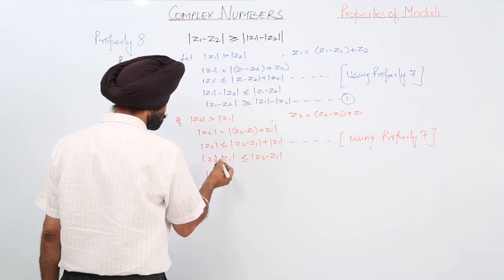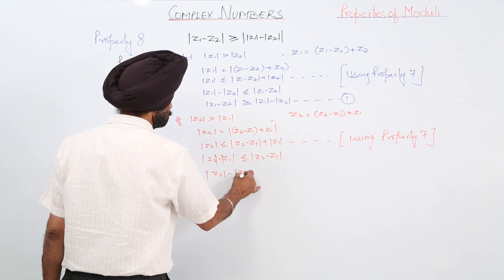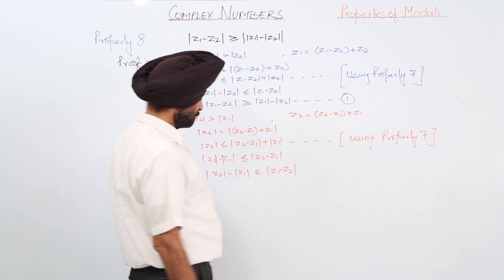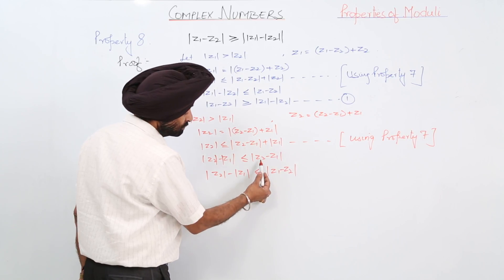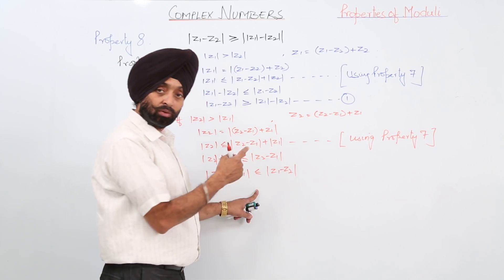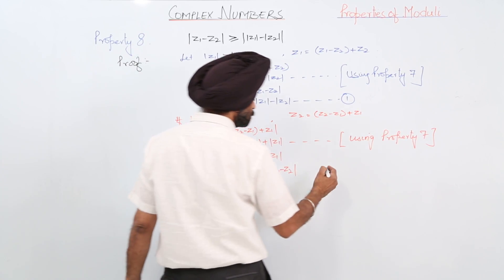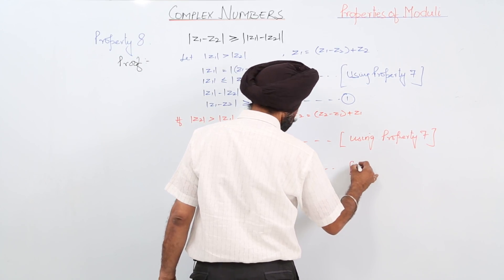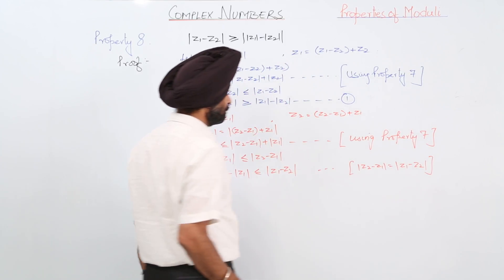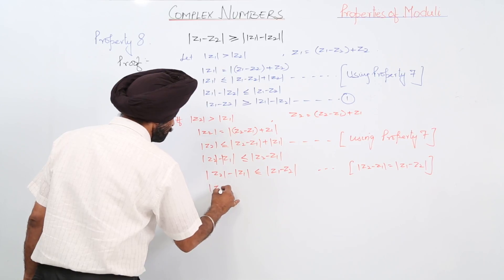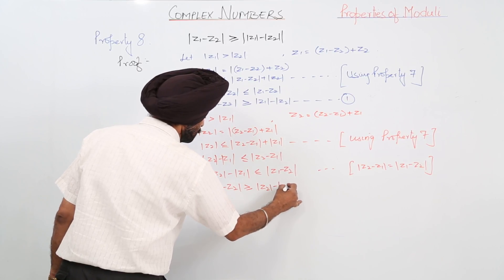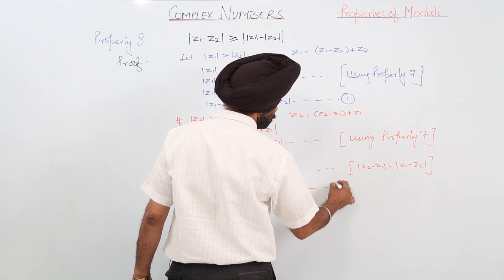Now, can we write the modulus of (z2 - z1) as less than or equal to the modulus of (z1 - z2)? The position of the complex numbers is changed, but the modulus is a square root, so the result will be the same. The modulus of (z2 - z1) equals the modulus of (z1 - z2). So the modulus of (z1 - z2) is greater than or equal to the modulus of z2 minus the modulus of z1. Let this be equation 2.